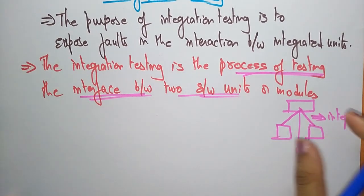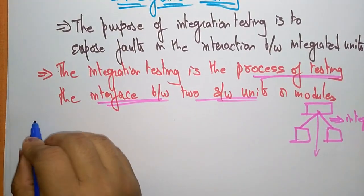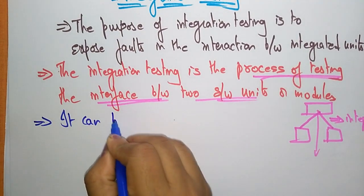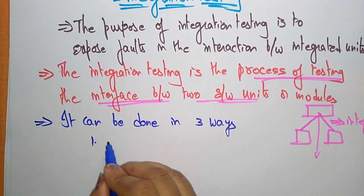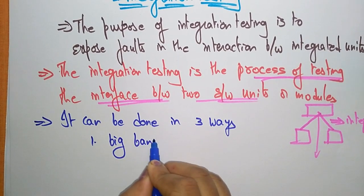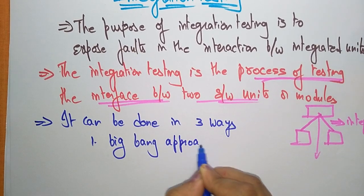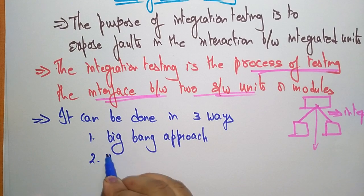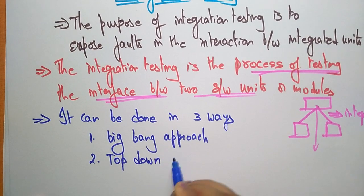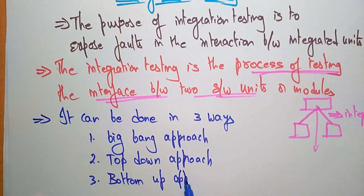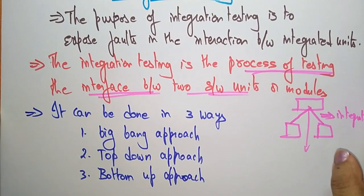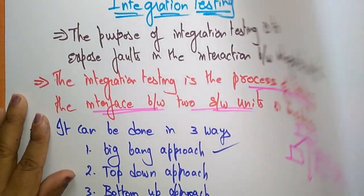Integration testing can be done in three ways. The first one is the Big Bang approach, the second is the Top Down approach, and the third is the Bottom Up approach. Now let us see the first one - the Big Bang approach.